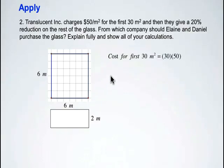So for this company, the cost for the first 30 meters squared that we're going to use is $50 per meter squared. So we've got 30 meters squared times the $50 per meter squared gives $1,500 for the first 30 meters squared of glass used from this company.